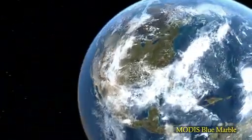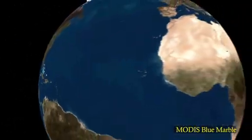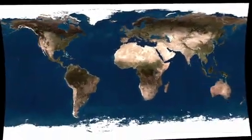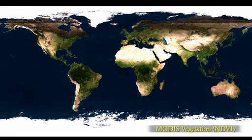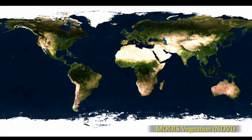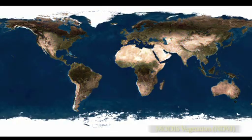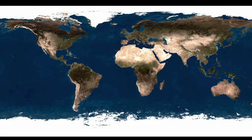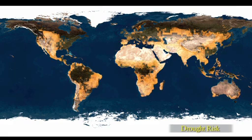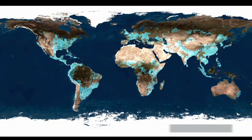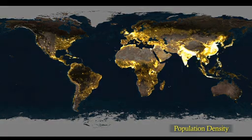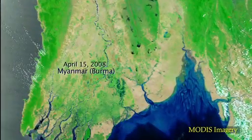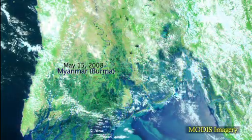Water availability varies from place to place and over time. The availability of water affects the type and abundance of vegetation — the primary source of food for animals and people. Extreme water cycle variability, unusually dry or wet conditions, impacts humans worldwide. Each year, hazards such as floods exact a costly economic and human toll.